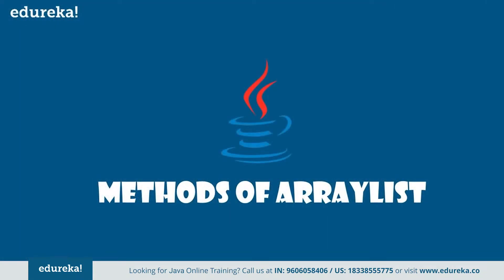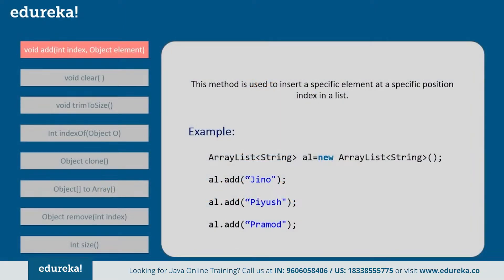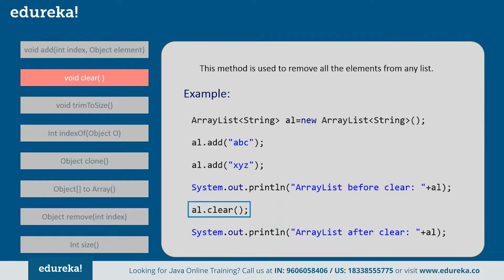Now let's dive into the various methods supported by ArrayList. First, the add() method: this method is used to add elements to the ArrayList — that is, it inserts a specific element at a specific position index in the list. We will demonstrate all the methods of ArrayList in Eclipse after knowing their concepts. Next, the clear() method: this method is used to remove all the elements from the list.